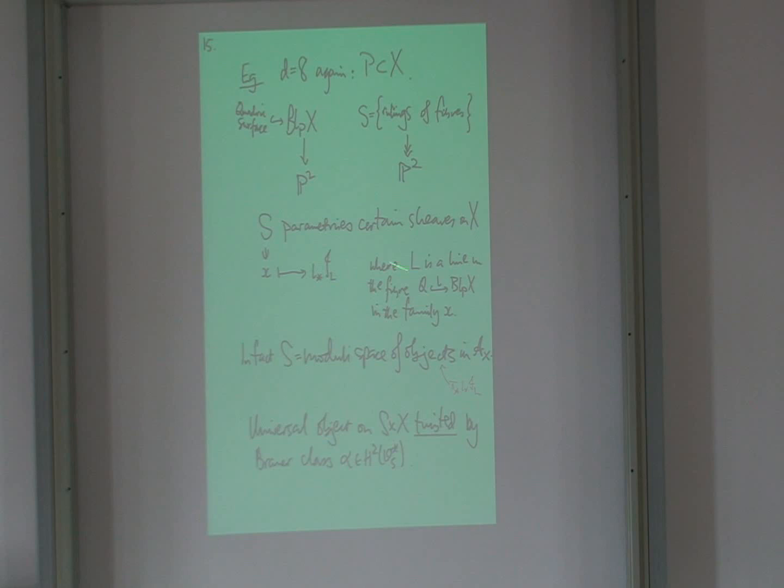I have this picture. And S, as we saw before, parametrizes certain sheaves on X. So roughly speaking, you know, a point in S, that was the choice of ruling. Pick one of the lines in the ruling. Take its ideal sheaf on the surface. It doesn't matter which one I take. They all define me the same line bundle on the surface. Push it forward. So S is now parametrizing certain sheaves on X. And in fact, it's a moduli space of objects in this AX. So I now project it as AX. So this K3 surface is really a moduli space of objects in this AX. And that's what I want to do.